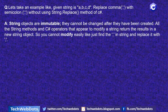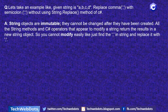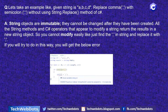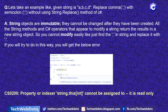String objects are immutable — they cannot be changed after they have been created. All string methods and operators in C# that appear to modify a string return the result in a new string object. So you cannot simply find the comma character and replace it with a colon. If you try to do this directly, you will get a compiler error CS0200.